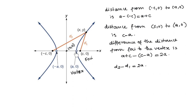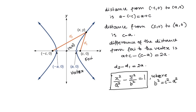The distance from the other focus to that vertex is c minus a. If you take the difference of the distances from each focus to the vertex, that will be (a + c) minus (c - a), which equals 2a. So the difference between the distances is always a constant, 2a. You can then use the distance formula to set up the general formula for the distance from each focus to a general point on the hyperbola and derive the standard equation. Please check the textbook if you are interested in learning how to derive this equation.